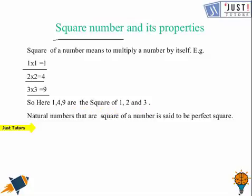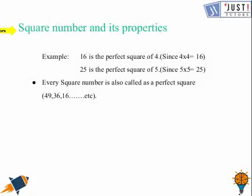Natural numbers that are square of a number are said to be perfect squares. Let us see more about perfect squares in this slide. Here 16 is a perfect square of 4 because 4 times 4 will give you 16. 25 is a perfect square of 5 because 5 times 5 will give you 25.